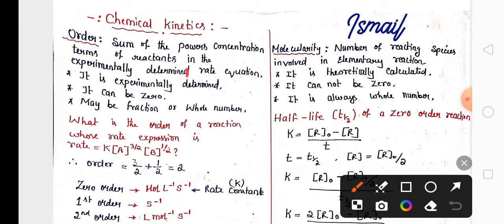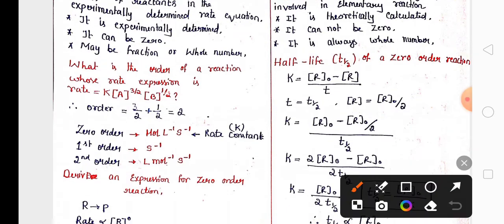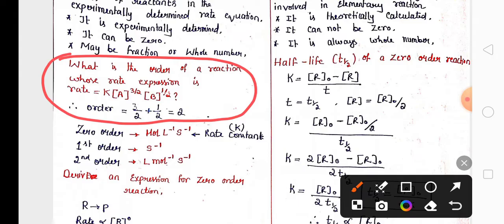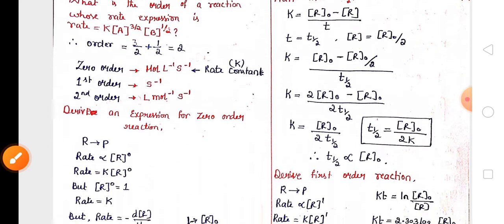First, you have to practice the difference between order and molecularity — two or three differences are enough if you remember them. Sometimes in exams, for two marks, they are going to ask how to calculate the order. Whatever powers are there on the concentration terms, if you add them, you will get the order — it is very easy.